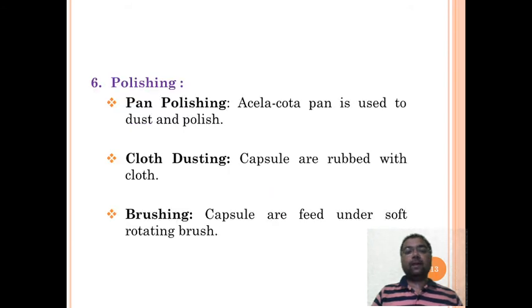Polishing is generally done by three methods, similar to coating. First is pan polishing where we use a cela quota pan. Second is cloth dusting where capsules are rubbed with a cloth. Lastly we have brushing where capsules are filled under soft rotating brush.